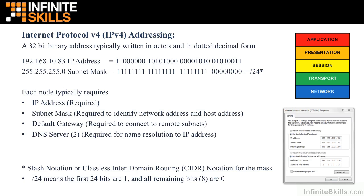Below that we see what we call the subnet mask. In binary, the subnet mask is a string of ones followed by a string of zeros. This subnet mask is what we call a slash 24 mask in CIDR — Classless Interdomain Routing — notation. That slash 24 designates that the first 24 binary bits in the subnet mask are ones, leaving eight remaining bits that must be zero, since each bit is either a one or a zero.